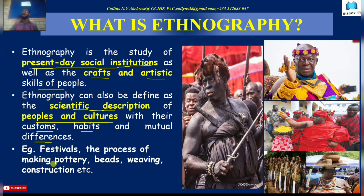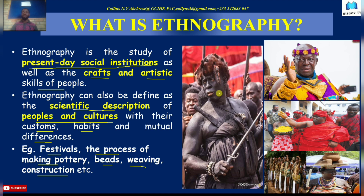Examples of some of these social institutions: we can talk of festivals, the process of making pottery, bees making, weaving, and construction. On the screen, we have some beautiful pictures showing the cultural life of the people. Some of these pictures were taken during a funeral rite — this picture here, for instance, was taken during a funeral rite of the African people, which is a social institution.